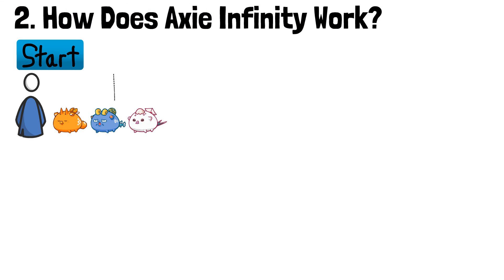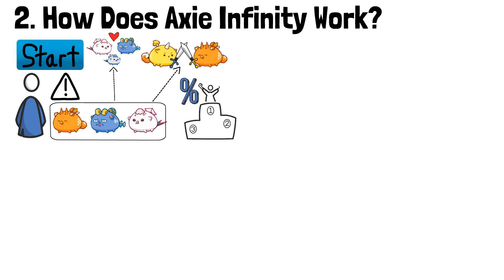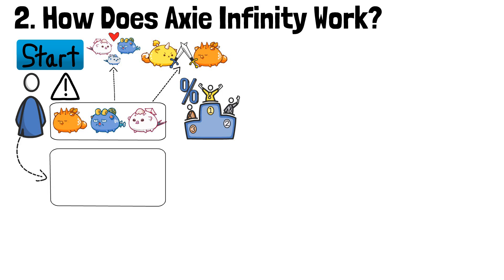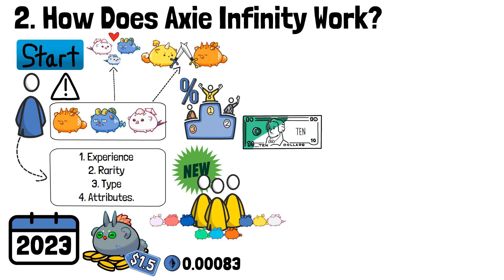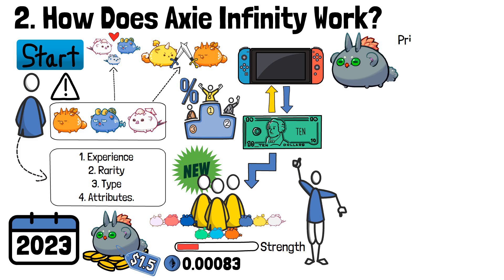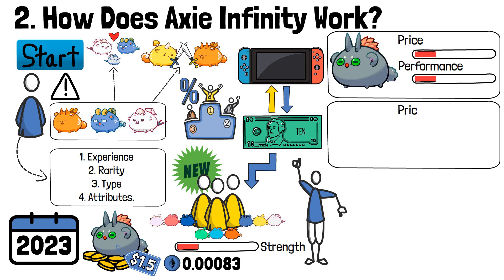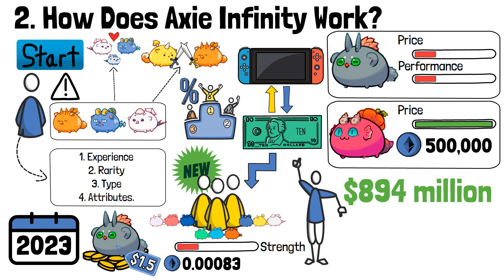To start the game, each user must acquire three Axies that will be used to breed and fight other characters. Users are encouraged to choose their Axies wisely, paying attention to each Axie's experience, rarity, type, and attributes. In the second half of 2023, the cheapest Axies retail for as low as $1.50, or 0.00083 Ether, meaning a new user can secure their first team for less than ten dollars. However, the cheaper the Axie, the lower its performance. On the other hand, some of the most expensive Axies are listed for a whopping 500,000 ETH, which at current prices would stand at around 894 million dollars. Let's take a look at the specifics surrounding Axie Infinity characters and what you should be looking at when gathering your first team.